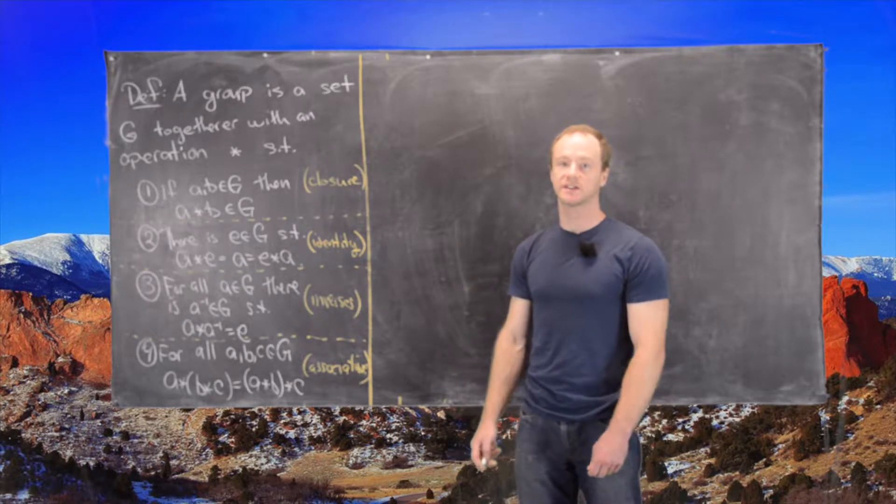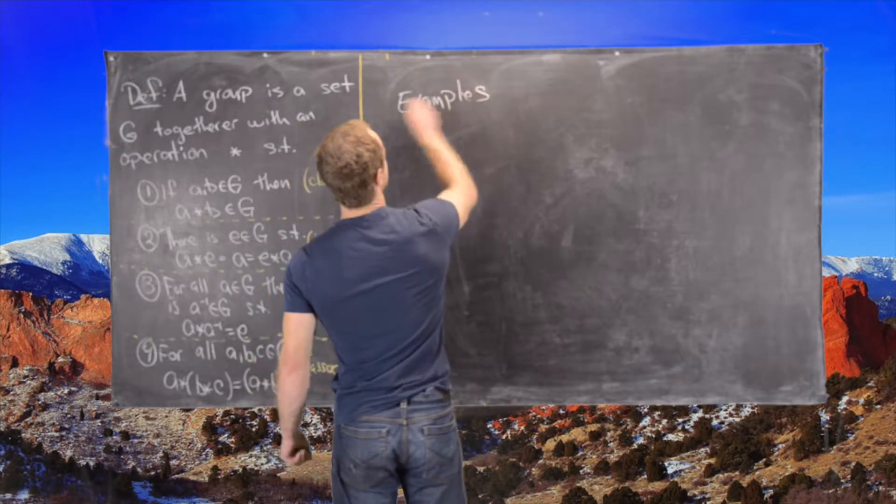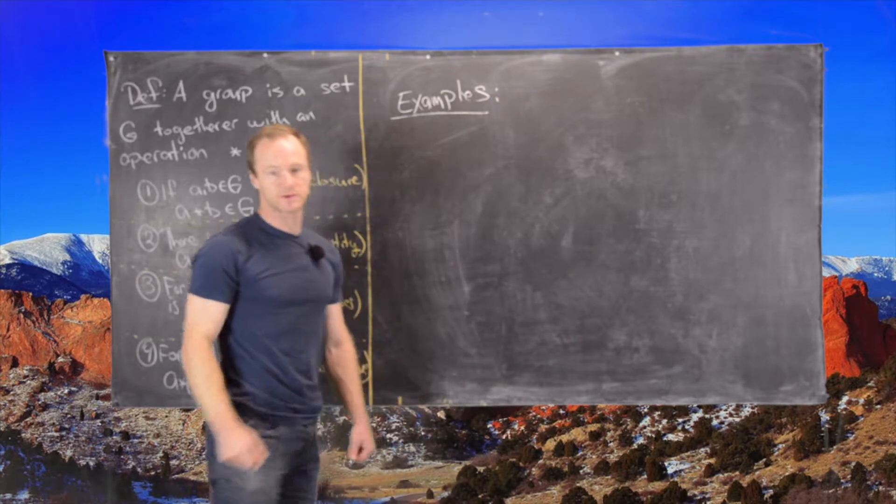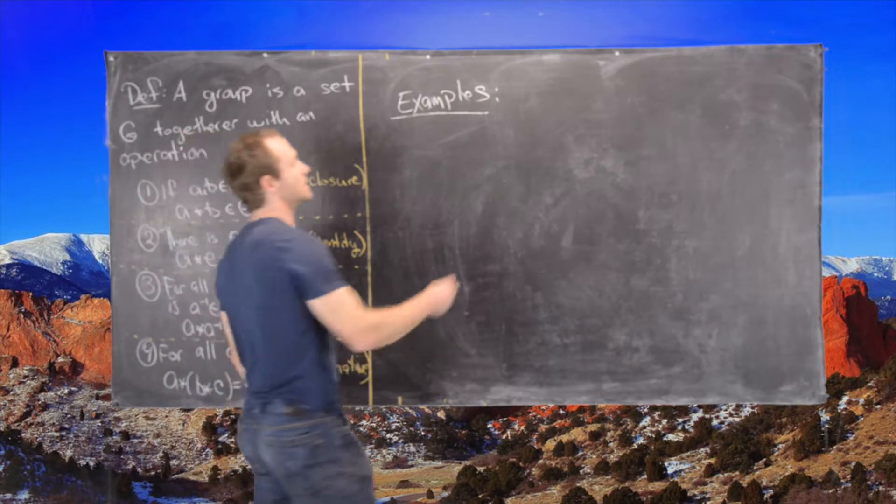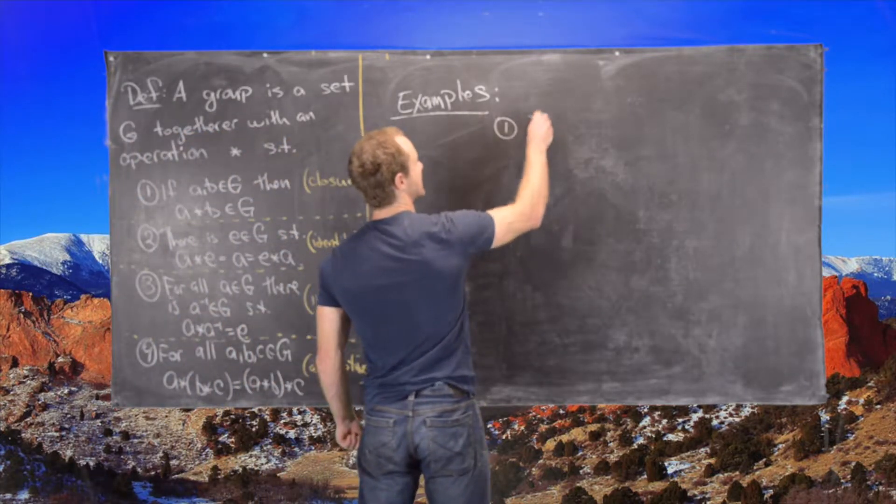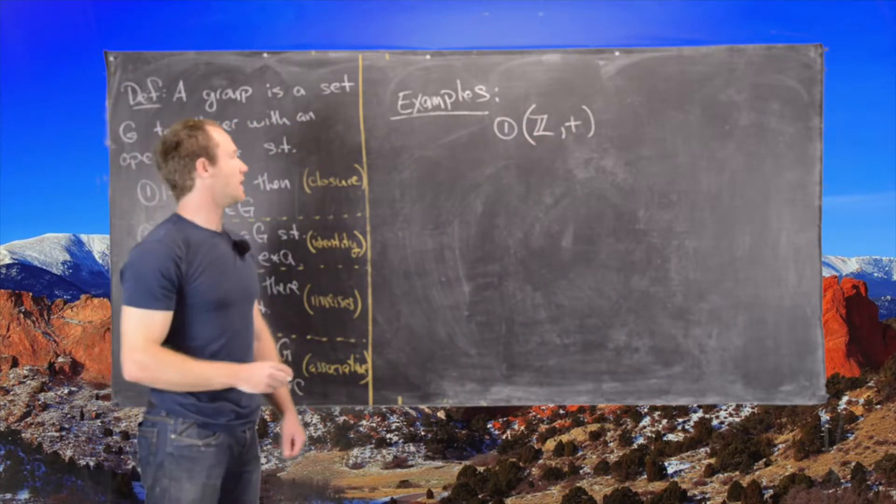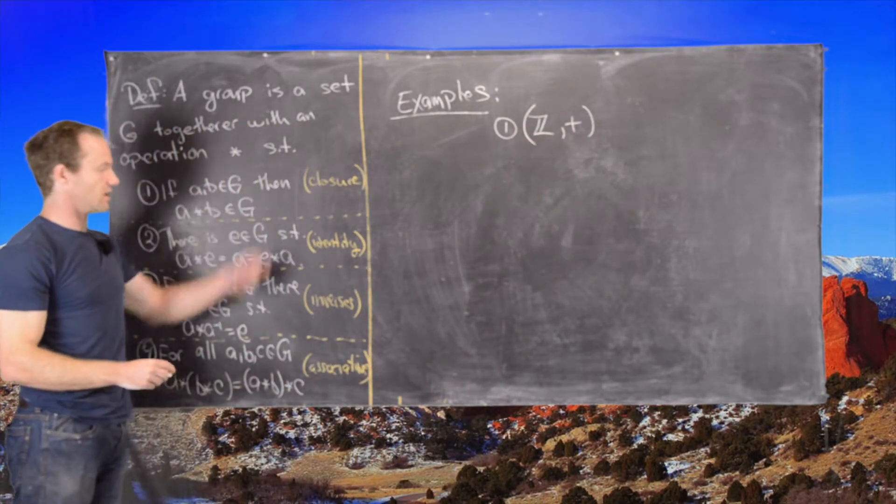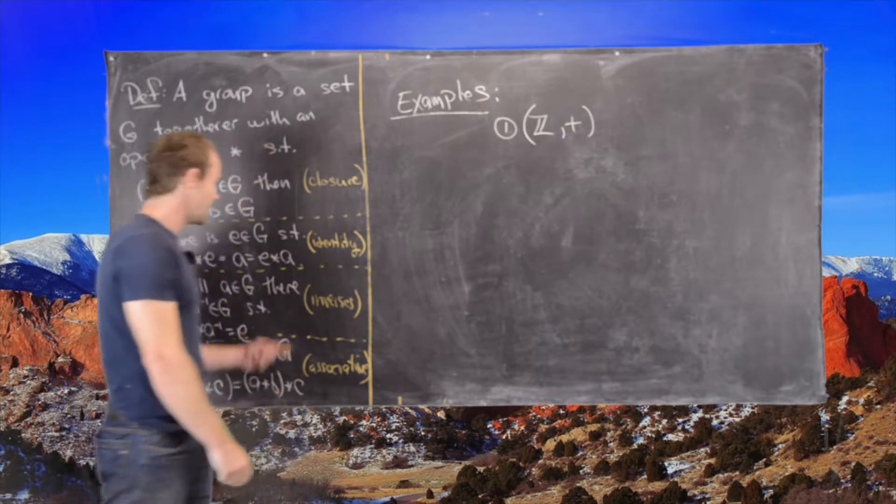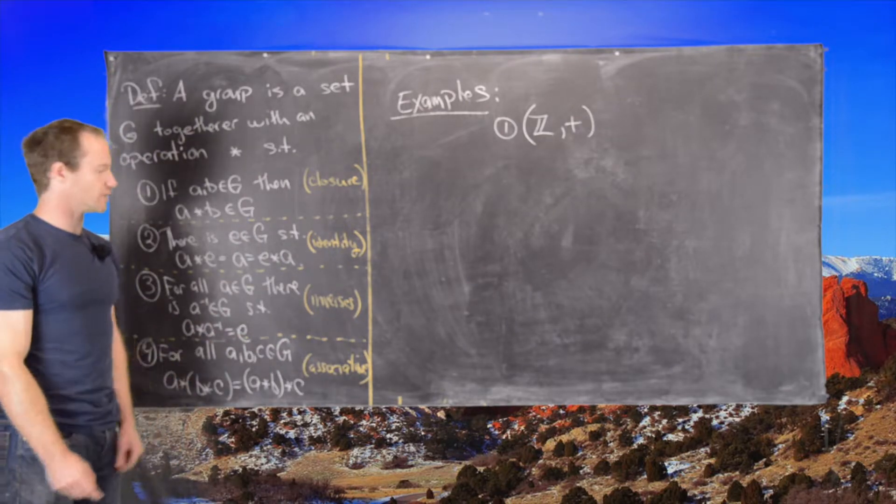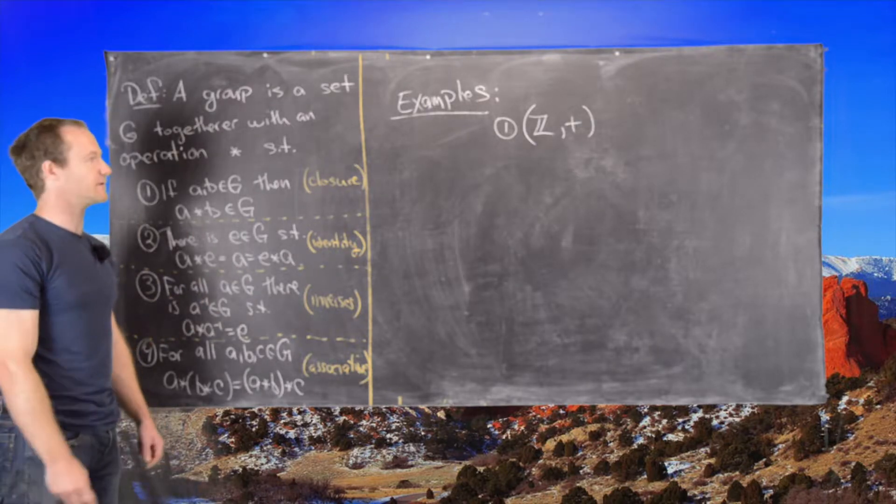Okay, so let's look at some basic examples. Now notice for the examples we'll need to specify a set and an operation. So maybe some familiar examples would be Z with addition, and that satisfies all of these properties. The identity would be zero, inverses would be negatives of whichever number you're starting with, and the associativity is built in from the addition.